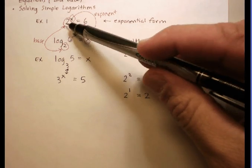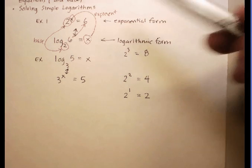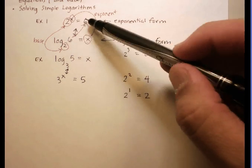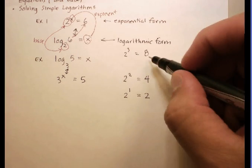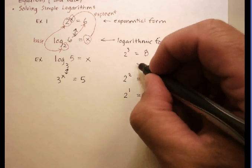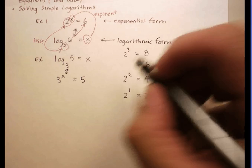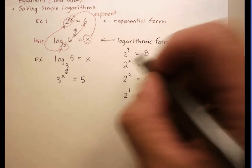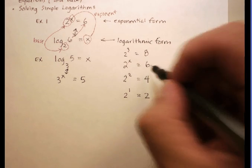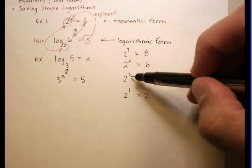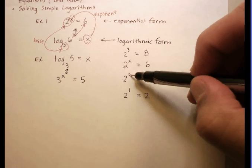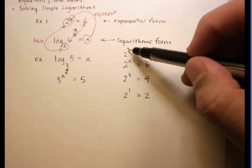Now, look up here to our original example one. We're saying 2 to the x is equal to 6. Now, notice 6 is right between those two numbers. So I'm saying 2 to the x is equal to 6. Notice that my exponent is going to probably be somewhere between 2 and 3.